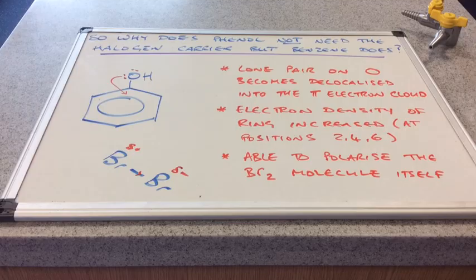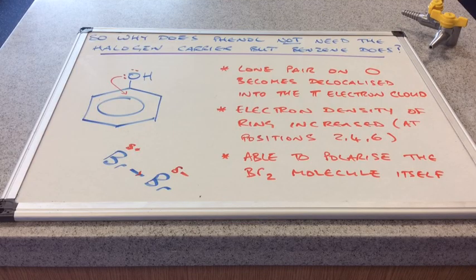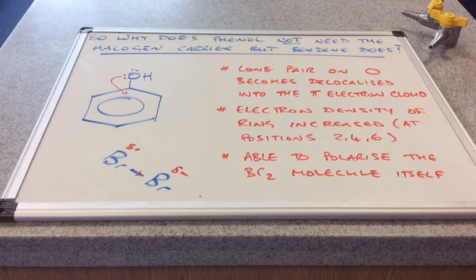So I've tried to summarise it there in those three key points. So the first key point, the lone pair or a lone pair on the oxygen atom becomes delocalised into the pi electron cloud.